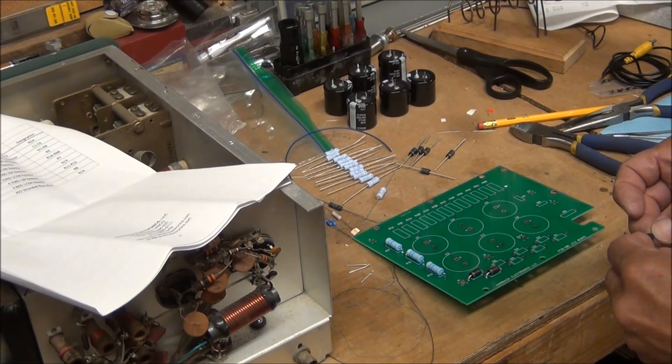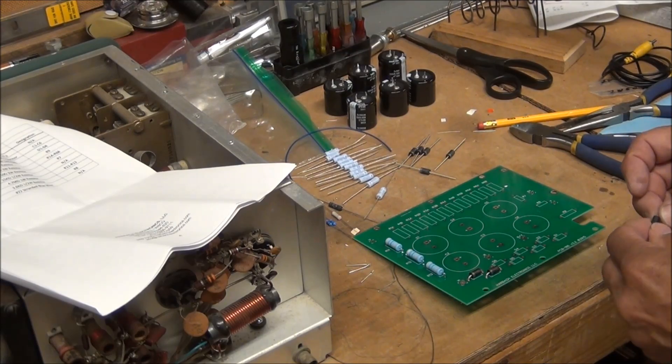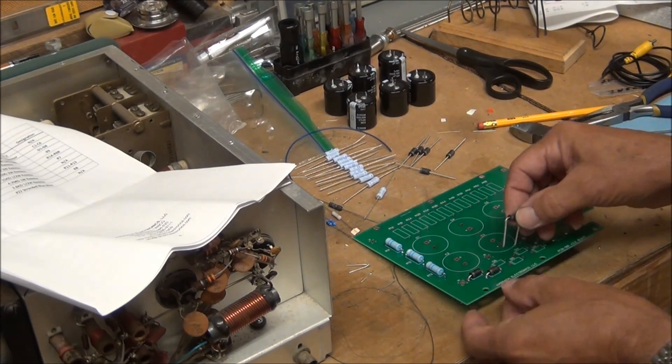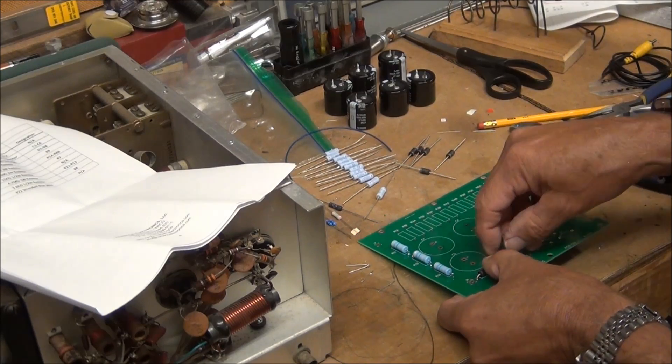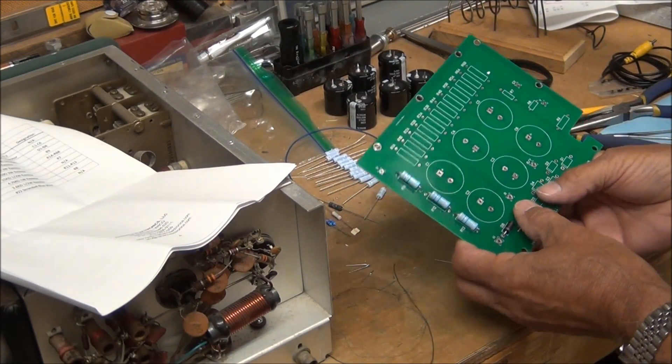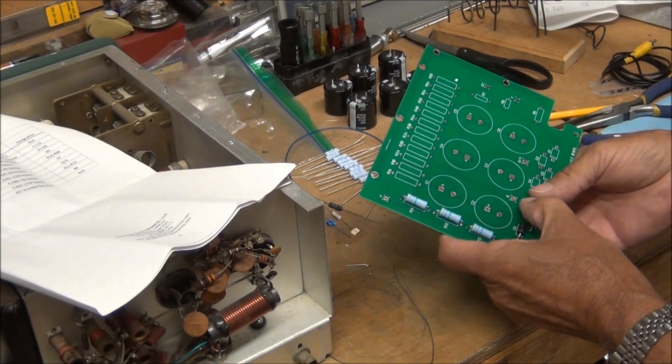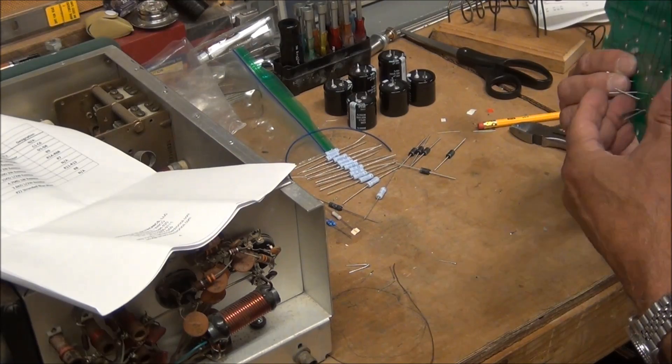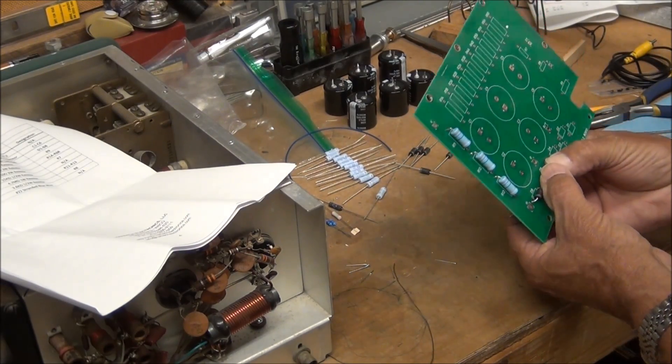Again when I'm installing these, I'm trying to bend these leads so that the part designator is facing up. So if they ever had to replace one of these diodes they could actually read the part type from the top of the board without having to desolder the unit.